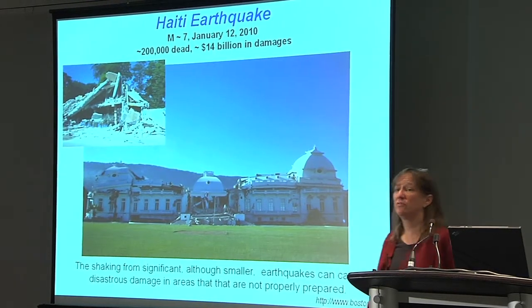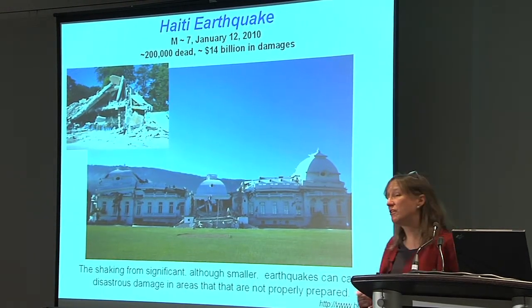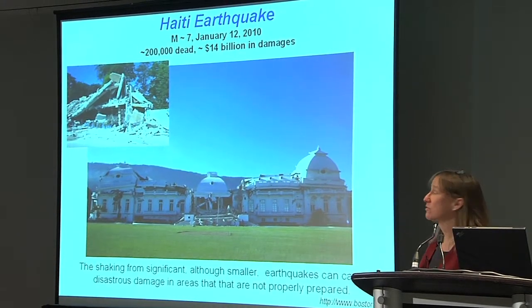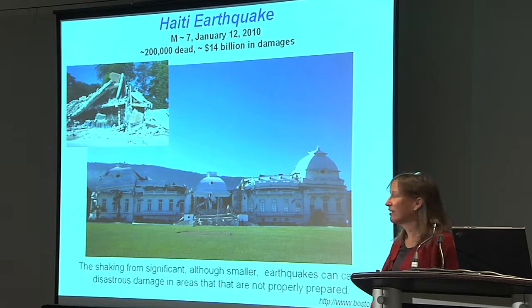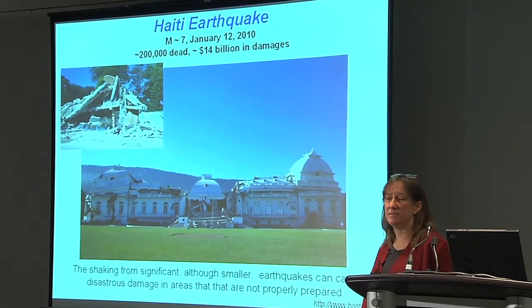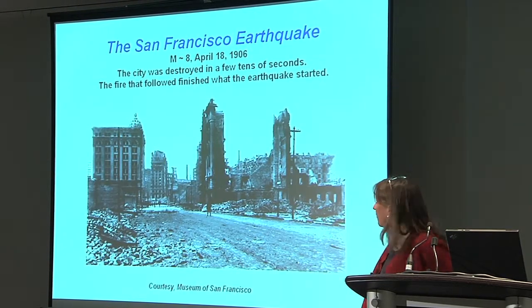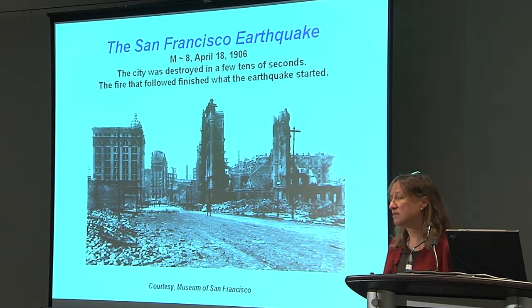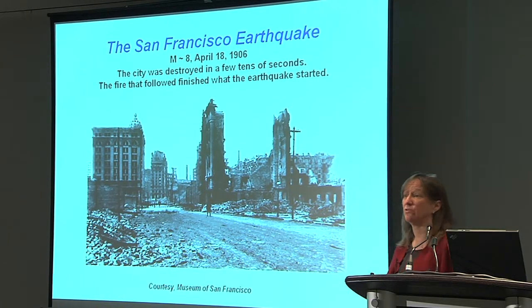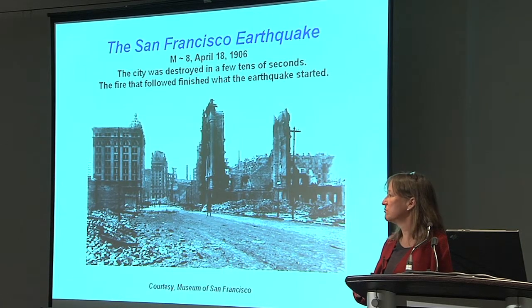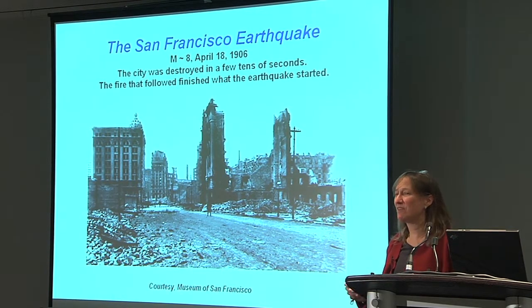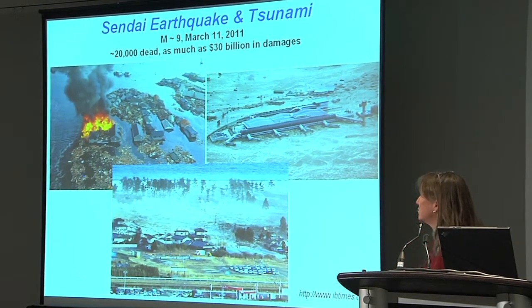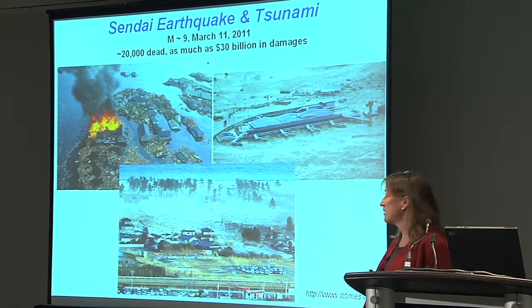I'm going to show you a few earthquakes from around the world as examples. There is, of course, the Haiti earthquake — a magnitude 7 that happened with approximately 200,000 dead and $14 billion in damages. Then there's the San Francisco earthquake. I'm going to talk a fair amount about California, because it's the first place that freely available, high-quality small seismic event data became available to those of us studying how earthquakes change in time on smaller timescales. And this is, of course, the Tohoku or Sendai earthquake and tsunami — 20,000 dead, as much as $30 billion in damages, and a magnitude 9.